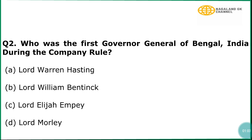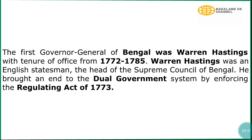Question number 2: Who was the first Governor General of Bengal, India, during the company rule? The correct answer is option number 4, Lord Warren Hastings. In explanation, the first Governor General of Bengal was Warren Hastings with a tenure of office from 1772 to 1785. Warren Hastings was an English statesman and the head of the Supreme Council of Bengal. He brought an end to the Dual government system by enforcing the Regulating Act of 1773.